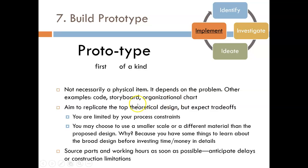Your aim is to replicate the top theoretical design, but expect trade-offs. You are limited by your process constraints. For example, you may want to use a specialized part, but it would take the shop two weeks to manufacture it for you, and you need it in one week.